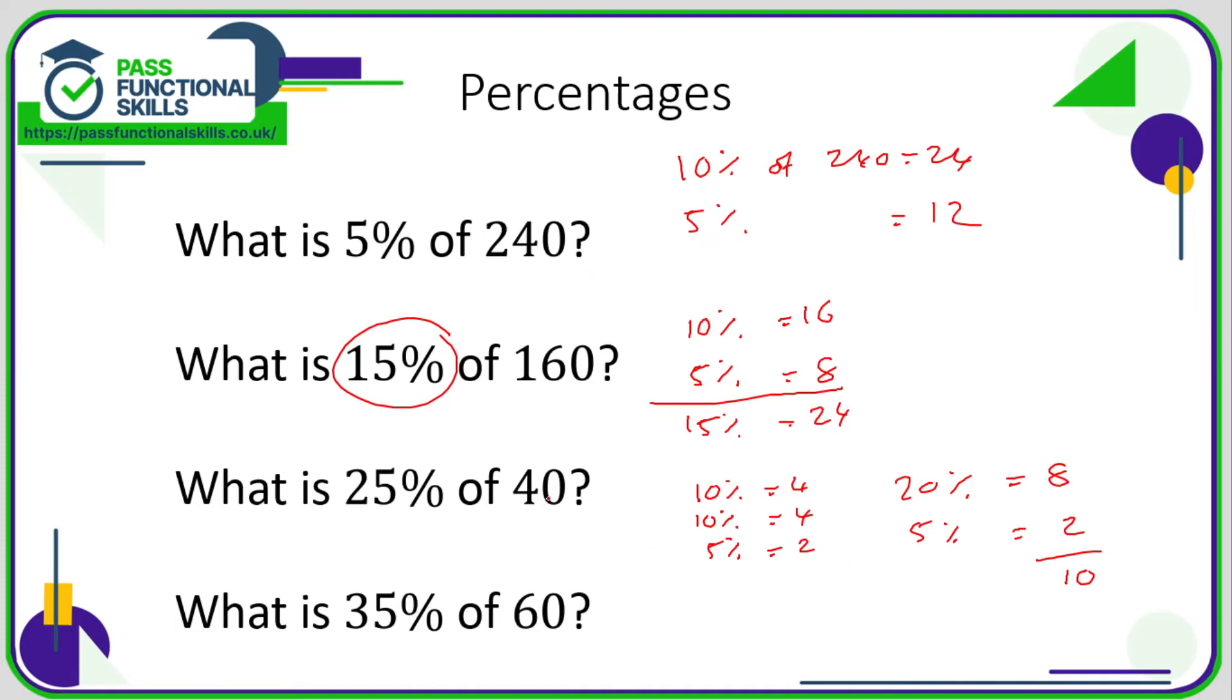But if you want, just break it down to 10s and 5s. Now 35%—I'm going to break that down to 30% and 5%. For 30%, I need to work out 10% first. 10% is 6, so 30% is 3 times 6, which is 18. 5% is half of the 6 because 6 was the 10%, remember, so 5% is 3. Now we want 35%, which is 30 plus 5, so 18 plus 3—that is 21.